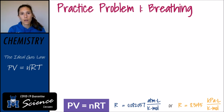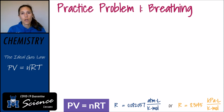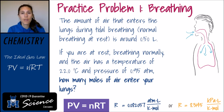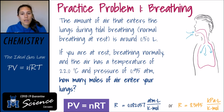In this first example, we're going to figure out, from three other variables, the condition of a gas. This problem has to do with breathing. On average, a person will breathe in and out about a half liter of air during tidal breathing. If you're at rest breathing normally — breathing in and out about a half liter — and the air has a temperature of 22 degrees Celsius and a pressure of 0.95 atmospheres, how many moles of air enter your lungs?